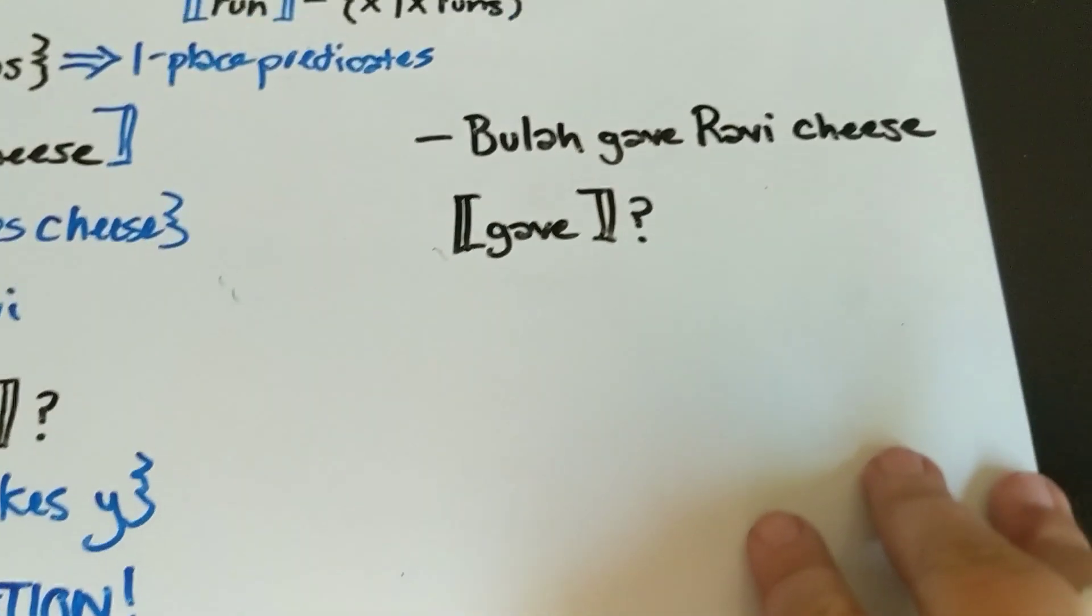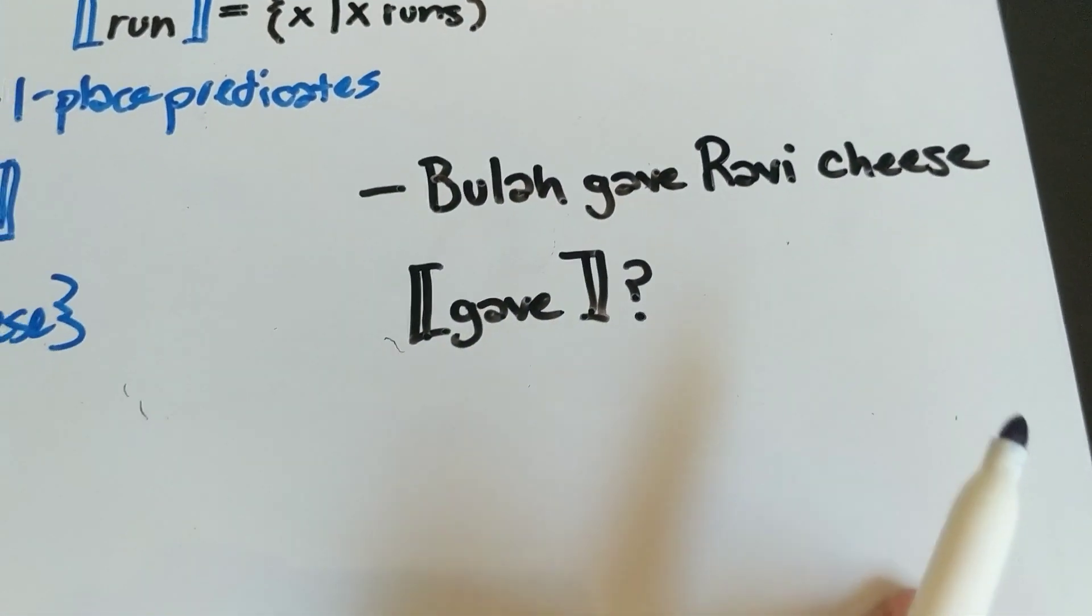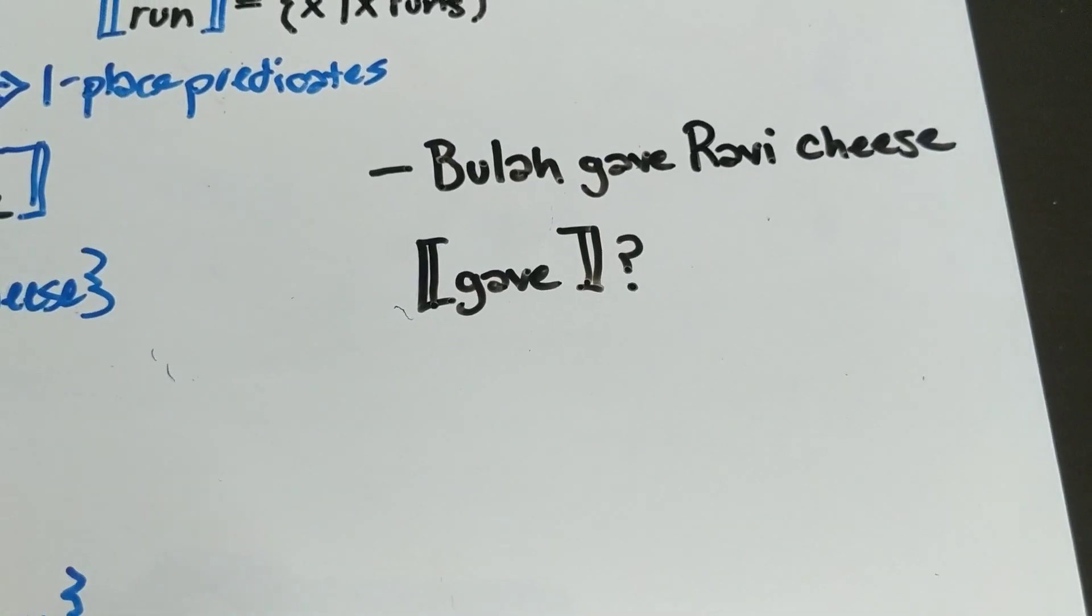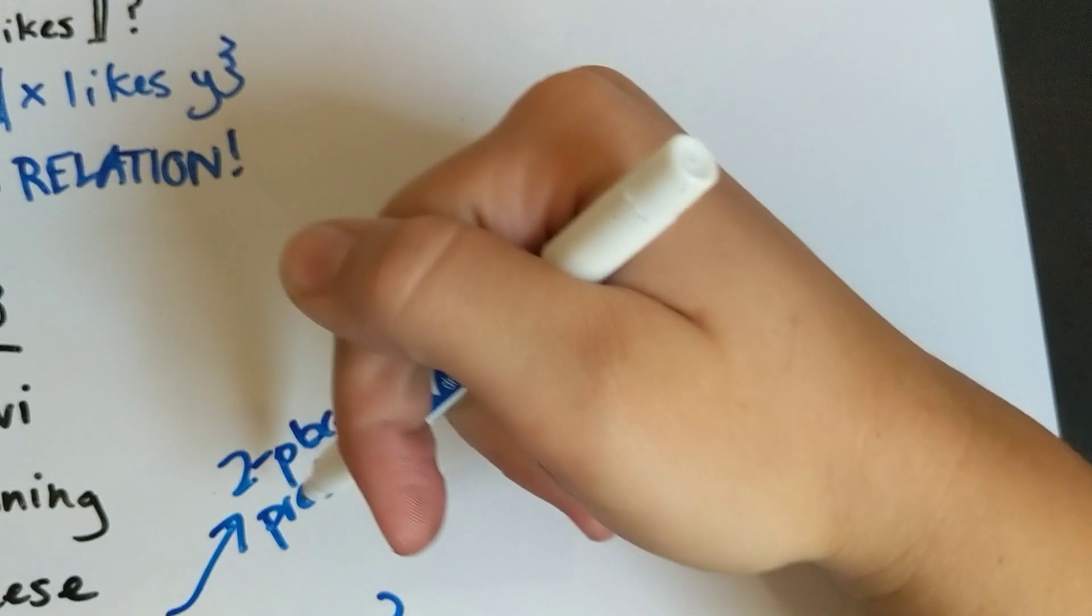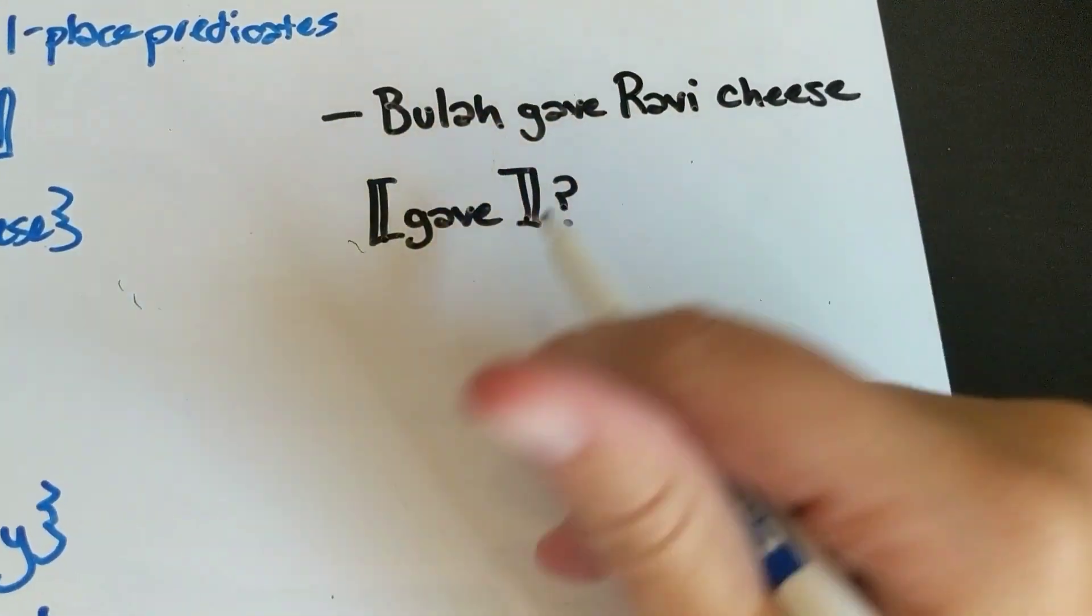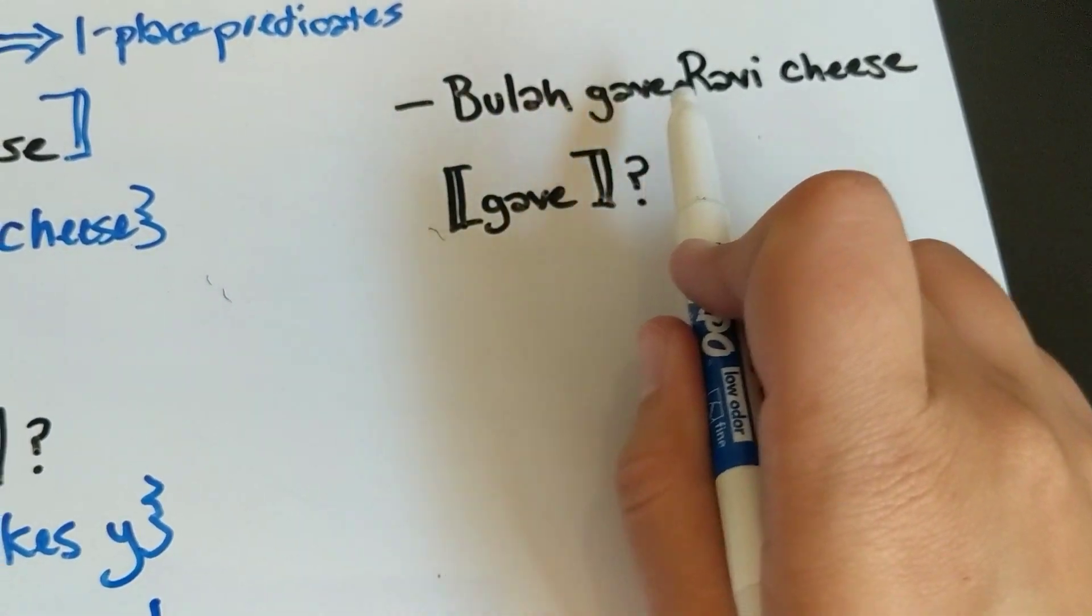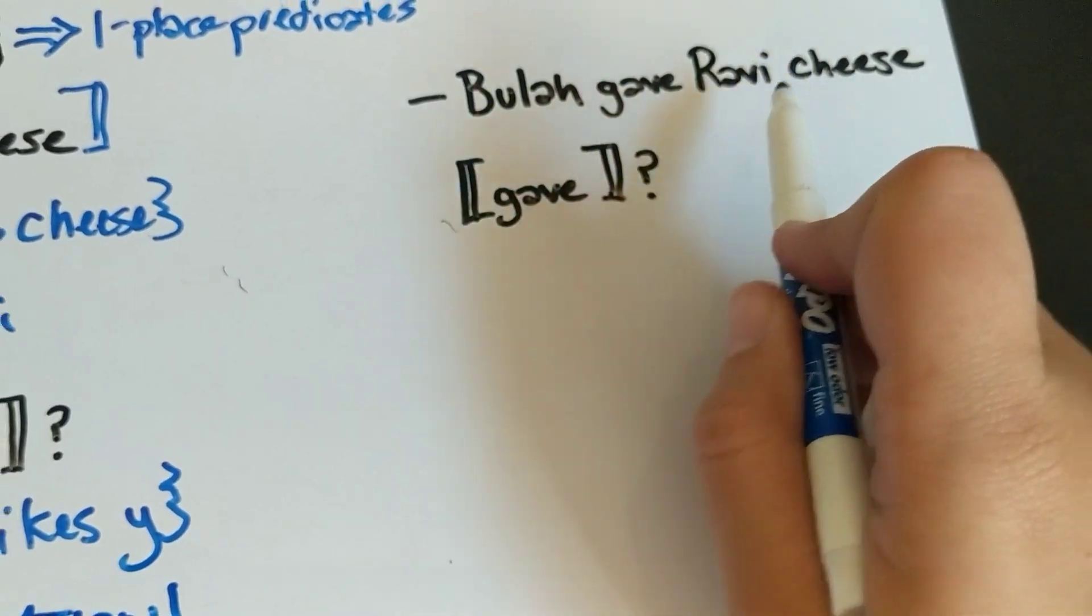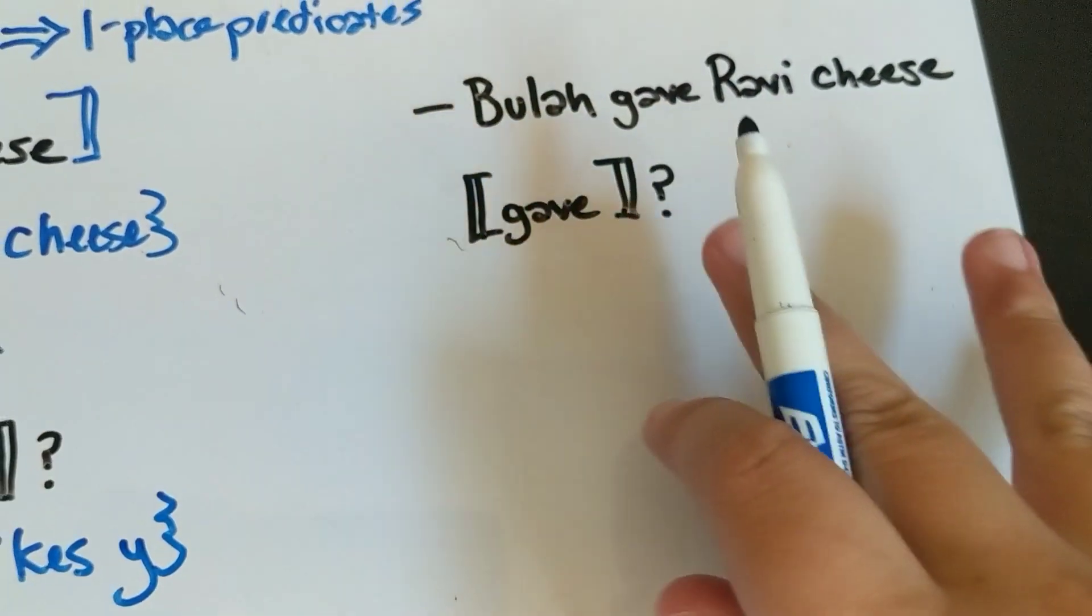If we look at this sentence, 'Beulah gave Ravi cheese,' and we want to assess the meaning of 'give,' we can't just do it as a two-place predicate because we've got three things involved. 'Beulah gave Ravi cheese' is not the same thing as 'Beulah gave cheese Ravi' - that would be weird - or 'Ravi gave Beulah cheese.' Those all have different meanings.